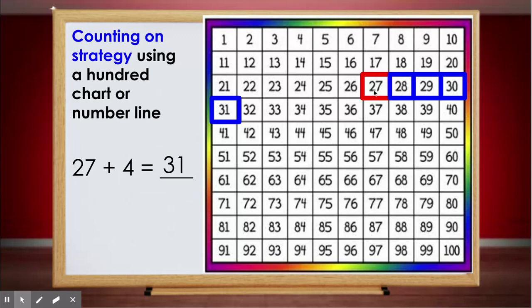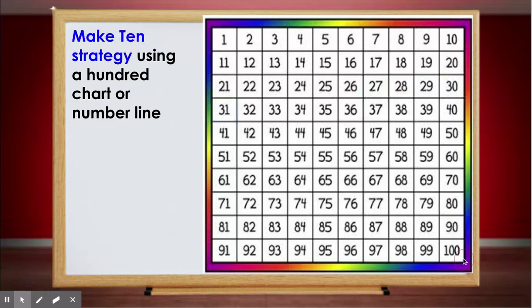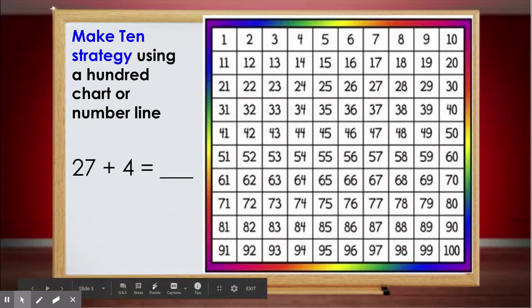Now it's very important to notice that I did not count the number 27 as one. I started from 27 and counted one space, another space, another space, and another space to count my four. So my 27 plus 4 equals 31. So that is our counting on strategy - we start from the big one and find the whole.